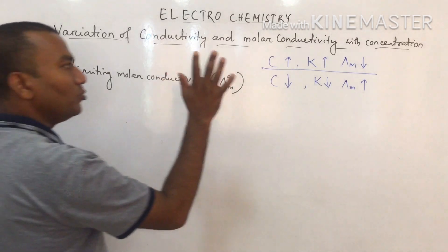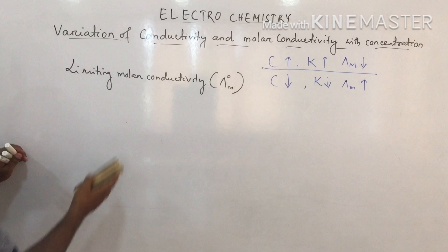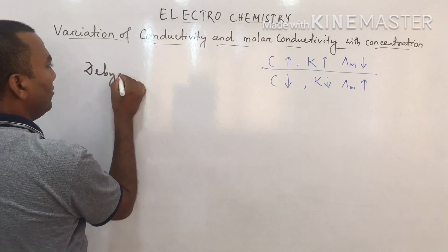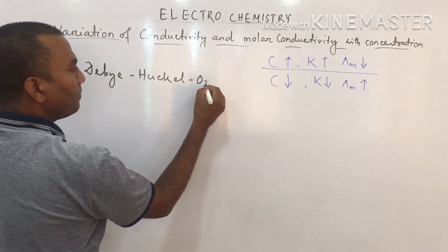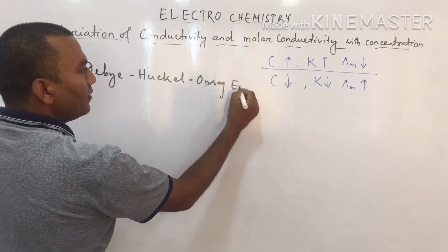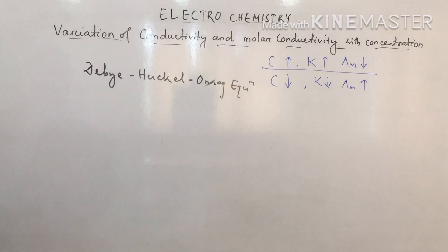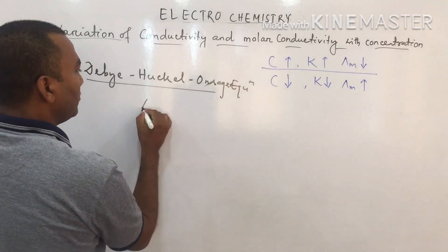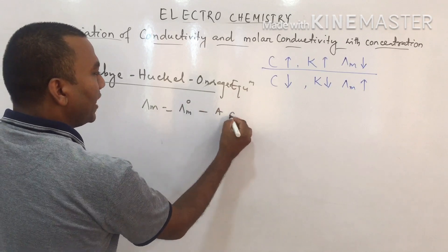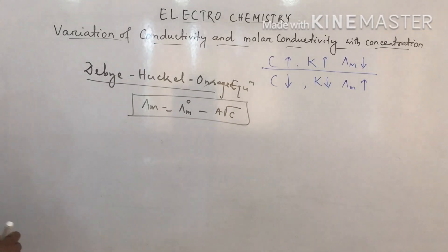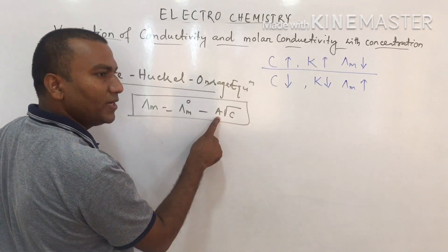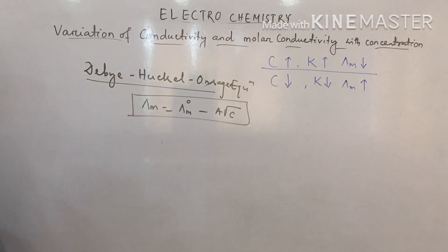This concept was explained by three scientists — Debye, Hückel, and Onsager — leading to the Debye-Hückel-Onsager equation: λm = λm⁰ − A√C, where λm is molar conductivity, λm⁰ is limiting molar conductivity, A is a constant depending on the nature of the electrolyte, and C is concentration.